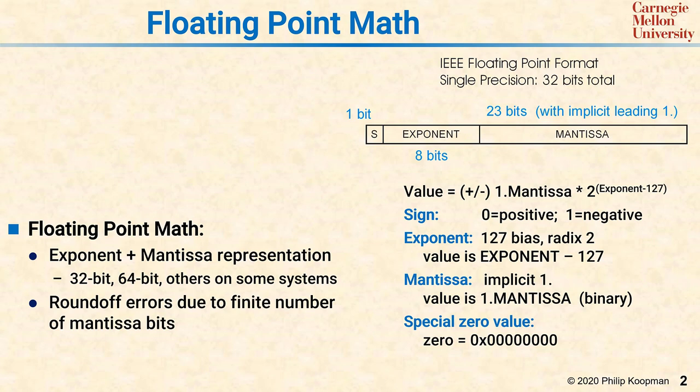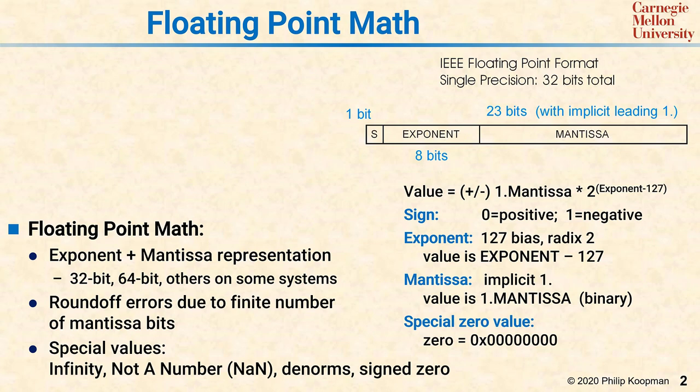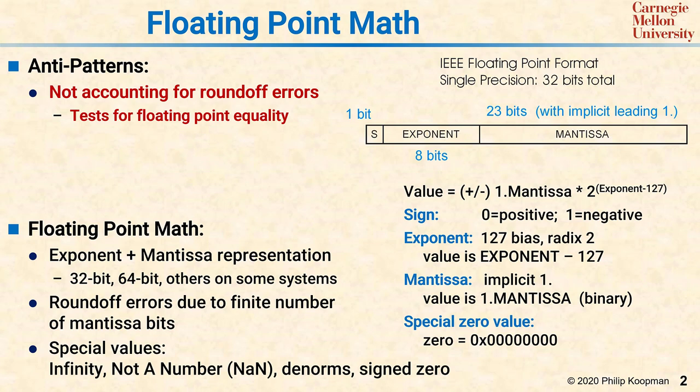Beyond 0, there are other special values. There's infinity, not a number, also called a NaN, denormalized numbers that do not have the implicit 1 dot in front of the mantissa, and there's even a signed 0. We'll get to all those things. The anti-patterns for floating-point math include not accounting for round-off errors, which affects tests for floating-point equality, not handling special values, and using floats if you really should have used an integer.